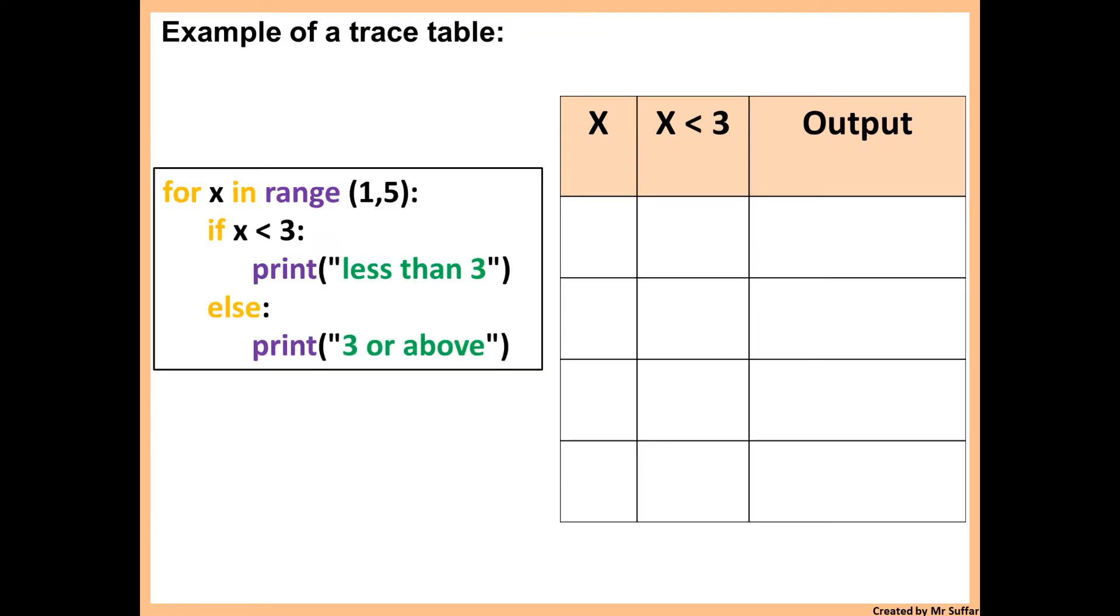Here is another example. So we got for x in range 1 comma 5. So x will start with 1 in this case. Then it says if x is less than 3. So is x less than 3? Is that true or false? Yes, that's true because 1 is less than 3. Then it says print less than 3 because it is less than 3. So the output will be less than 3.